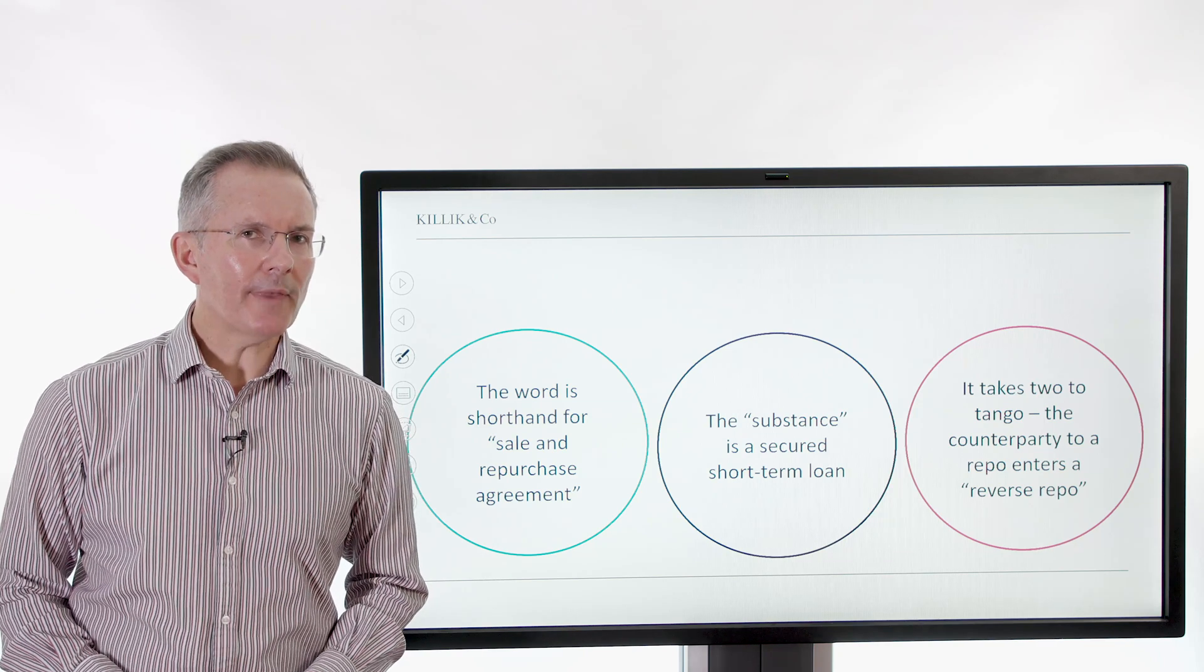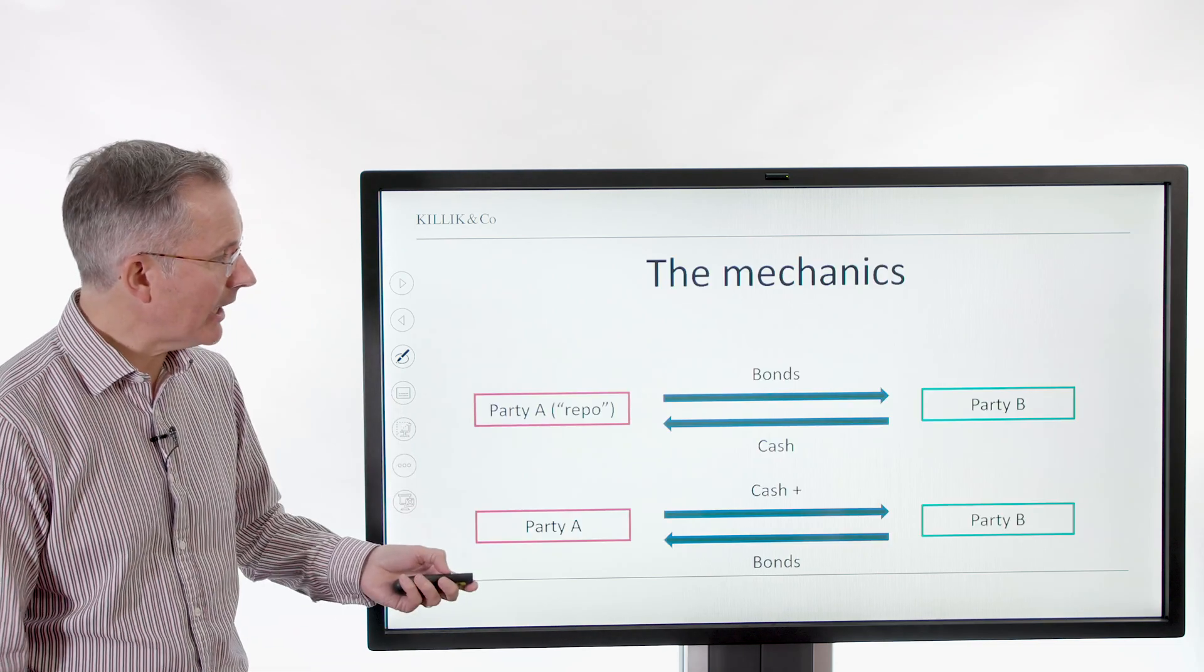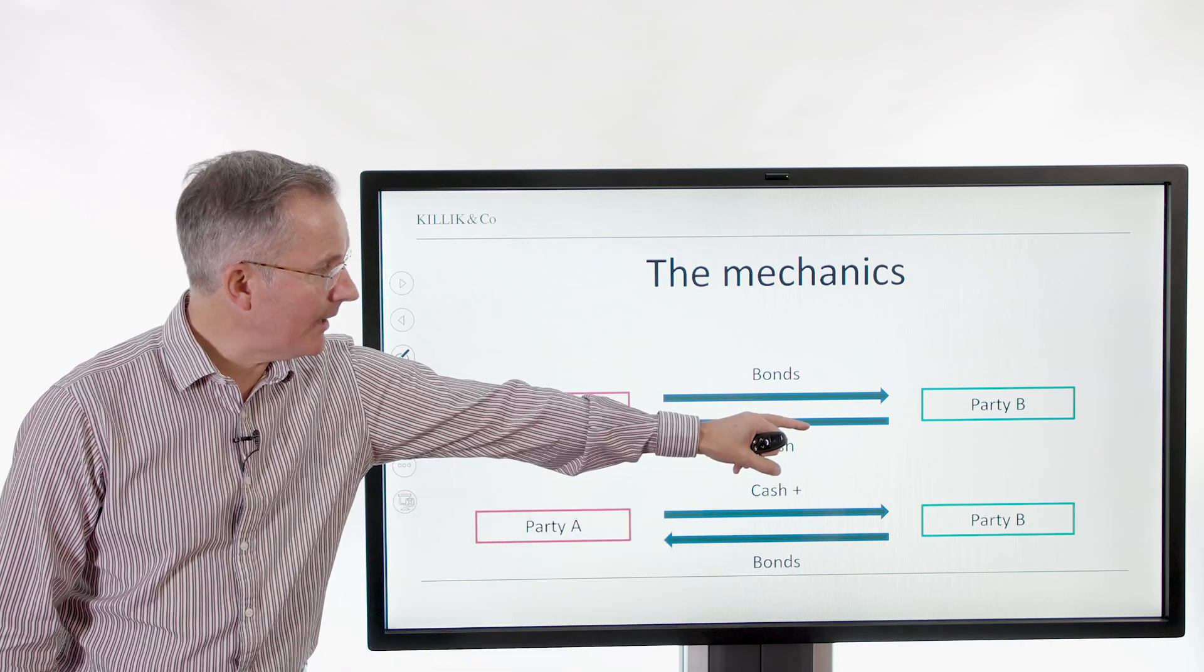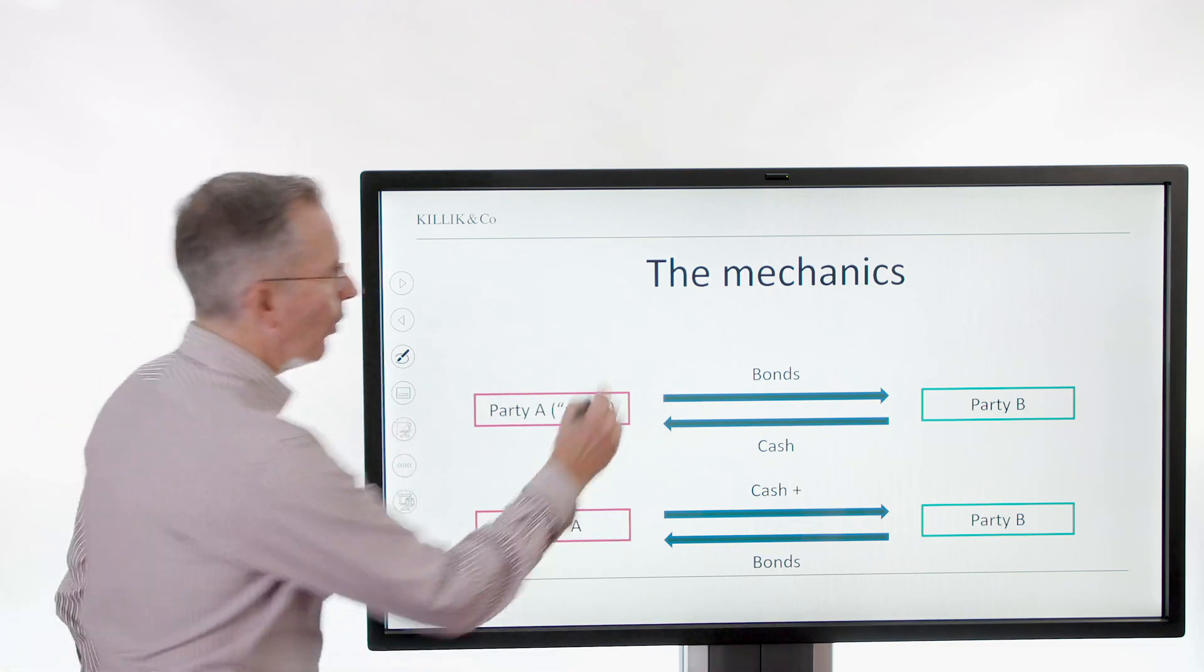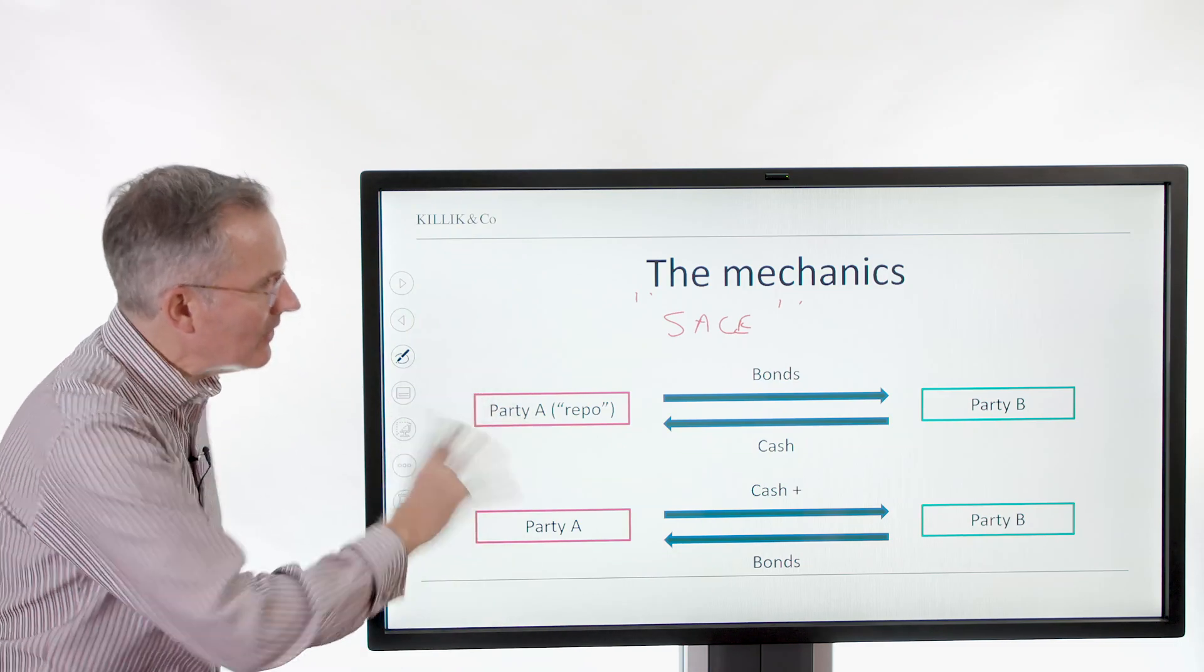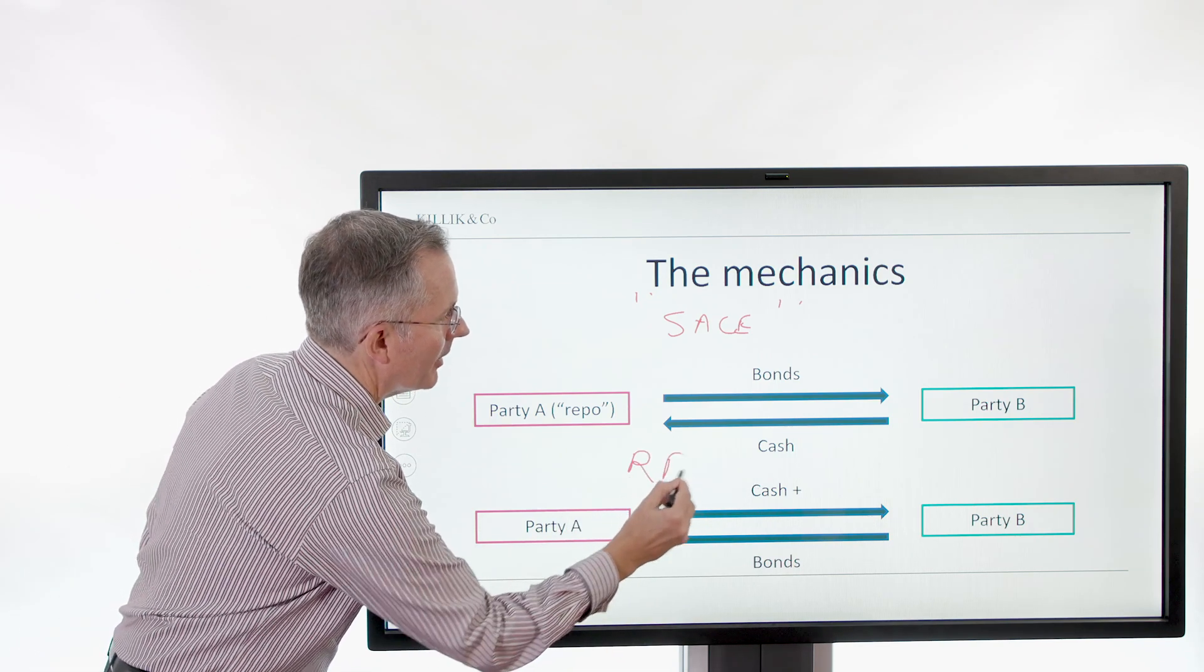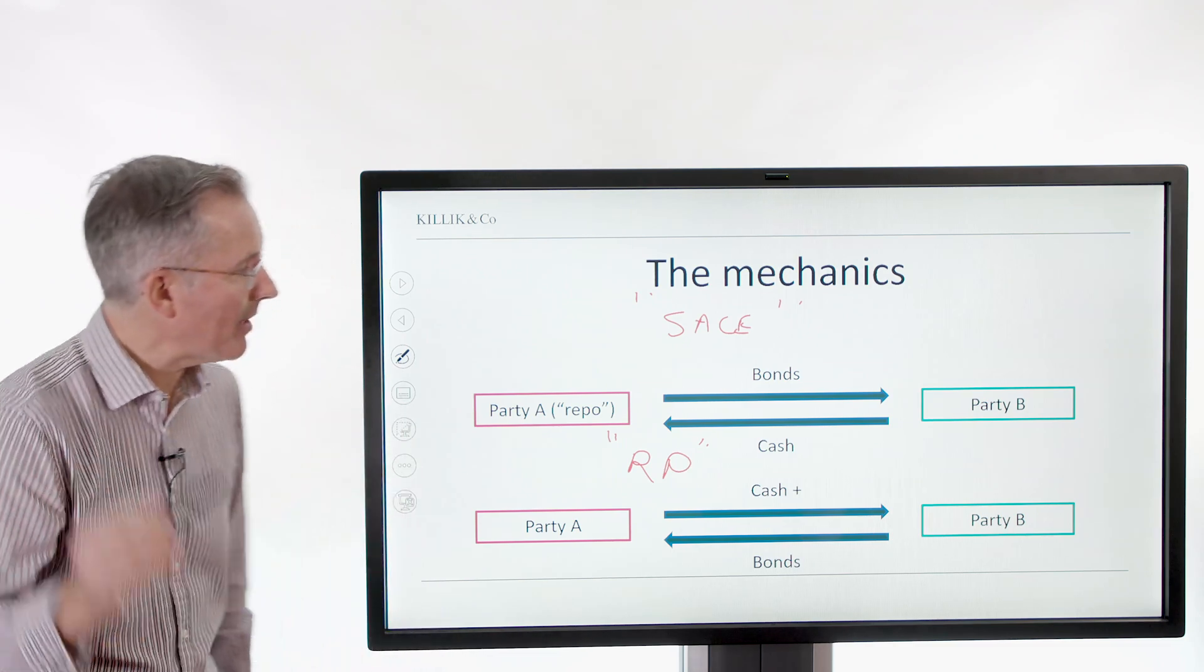So why would you be doing this thing? Let's have a look at how these things are supposed to work. Very two parties, party A and party B. Not great imagination there on my side. And the repo is party A saying, right, short-term, I need some cash and I'm prepared to lend bonds that I currently hold to get it. Now, it is called a sale, technically speaking, that bit. And then the second leg is where you back that out. And you'll notice that the bonds go back the other way and a little bit more cash goes from party A to party B. So that is technically the repurchase. So sale and repurchase agreement or repo. But the substance is a secured short-term loan.